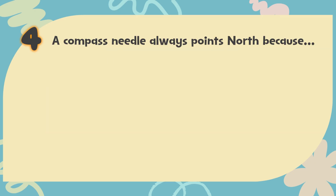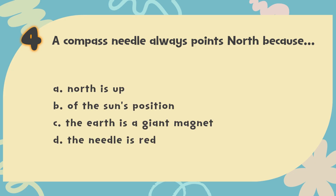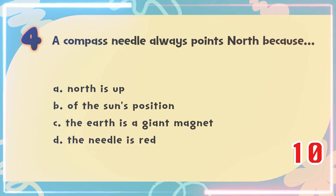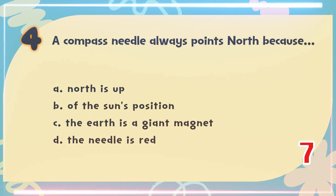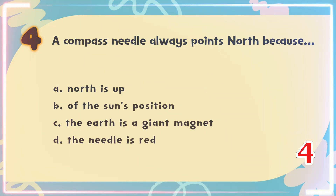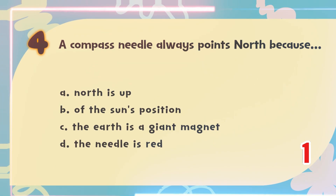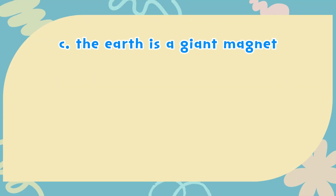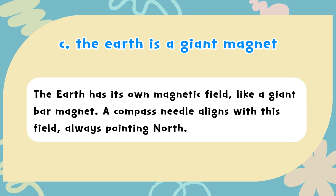Number 4: A compass needle always points north because — A. North is up, B. Of the sun's position, C. The earth is a giant magnet, D. The needle is red. The correct answer is C. The earth is a giant magnet. The earth has its own magnetic field, like a giant bar magnet. A compass needle aligns with this field, always pointing north.